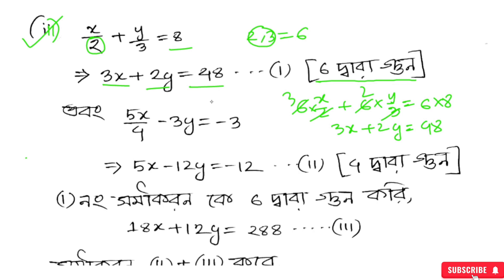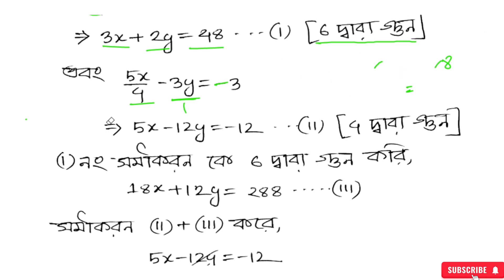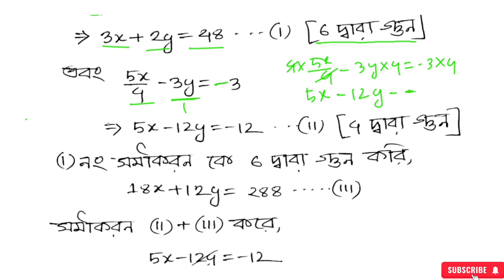So the solution of it - okay, to make a - 3x plus 2y is equal to a number. That is the first equation. Now the second equation: x by 4 plus 3y is equal to 3, or minus 3. Now I'm going to multiply by 4 into 5x by 4 minus 3y into 4, and it is equal to minus 3 into 4.